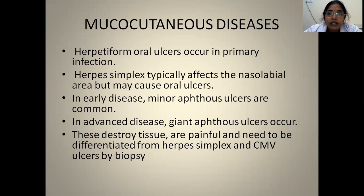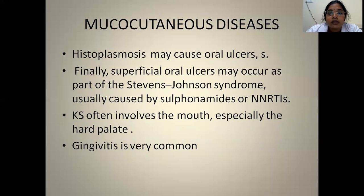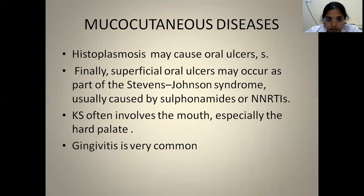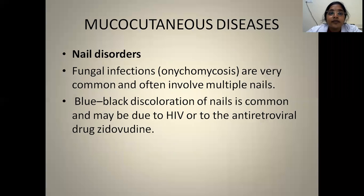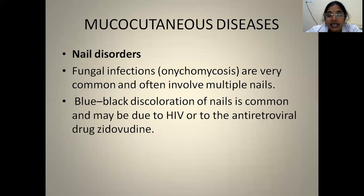To differentiate herpetiform ulcers from herpes simplex ulcers or CMV ulcers, biopsy is required. Histoplasmosis also causes oral ulcers in AIDS patients. As part of Stevens-Johnson syndrome, patients can have superficial oral ulcers. Kaposi's sarcoma can involve any part of the body and form ulcers, especially in the hard palate. Gingivitis is common. Fungal infection of the nails — onychomycosis — occurs in AIDS individuals due to reduced immunity. There can also be discoloration of nails due to the virus itself or ART drugs like zidovudine.